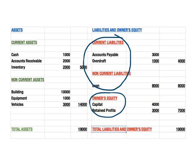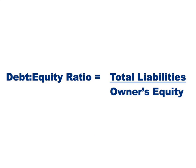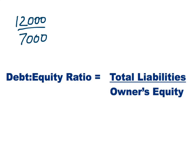We can see here that the total liabilities equals current liabilities plus non-current liabilities, which comes to $12,000, and the owners' equity is $7,000. Putting these numbers into the equation gives us $12,000 divided by $7,000, and that ratio comes out at about 1.7 to 1.